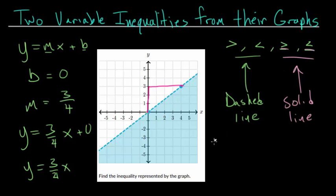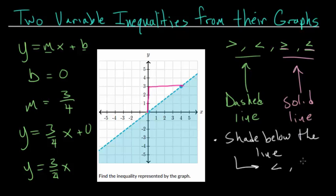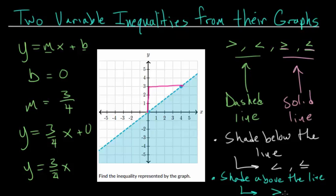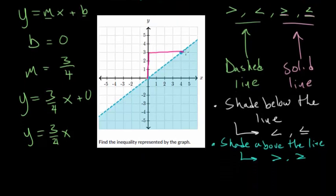If we shade below the line, we're dealing with either less than or less than or equal to. But if we shade above the line, we're dealing with either greater than or greater than or equal to. Now, because we have a dashed line and we're shading below, we can transform the equation of the line into the inequality describing the graph. We are shading below the line and it's dashed, so we know it's not less than or equal to. So we can write that y is less than three-fourths x.